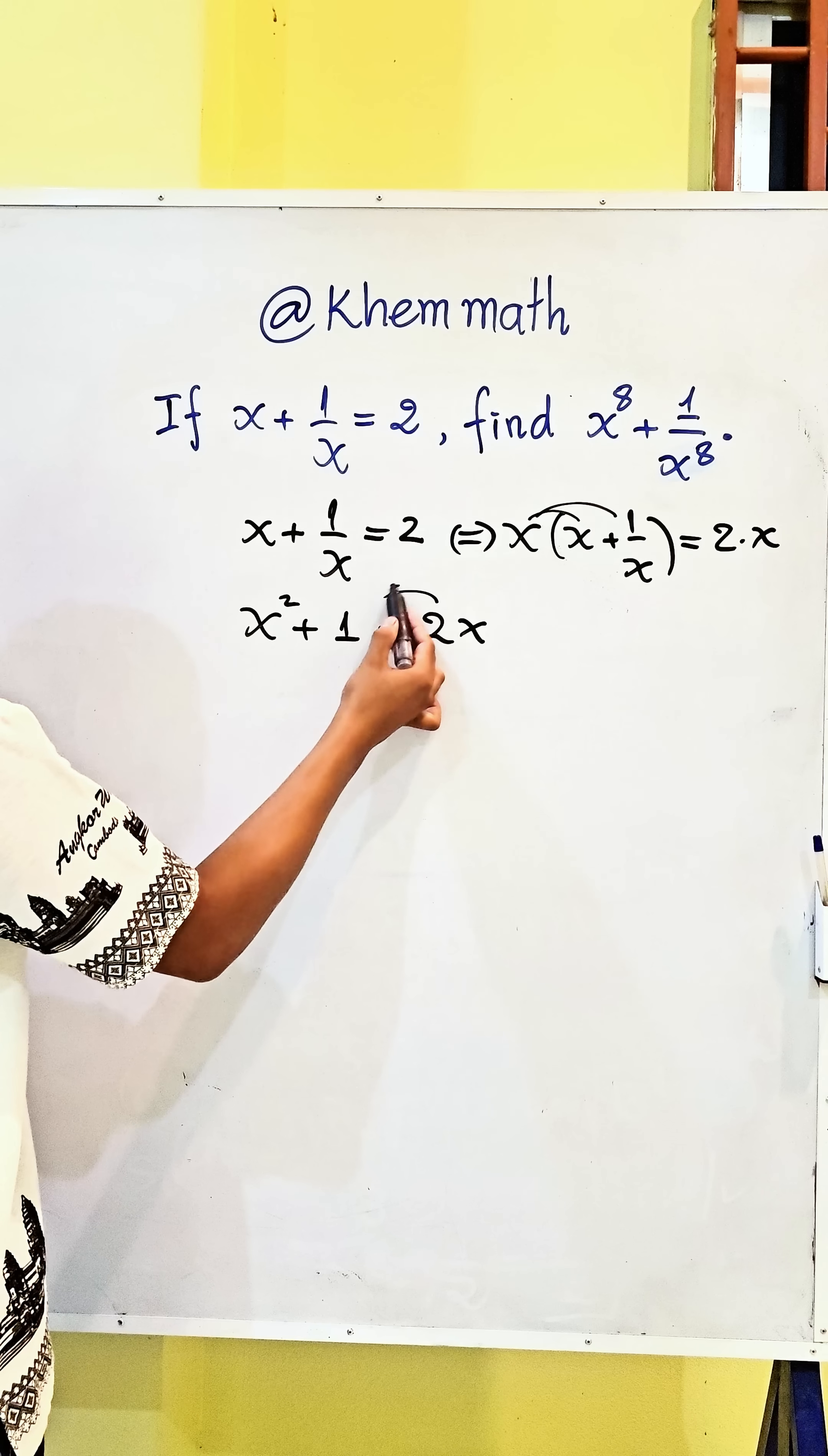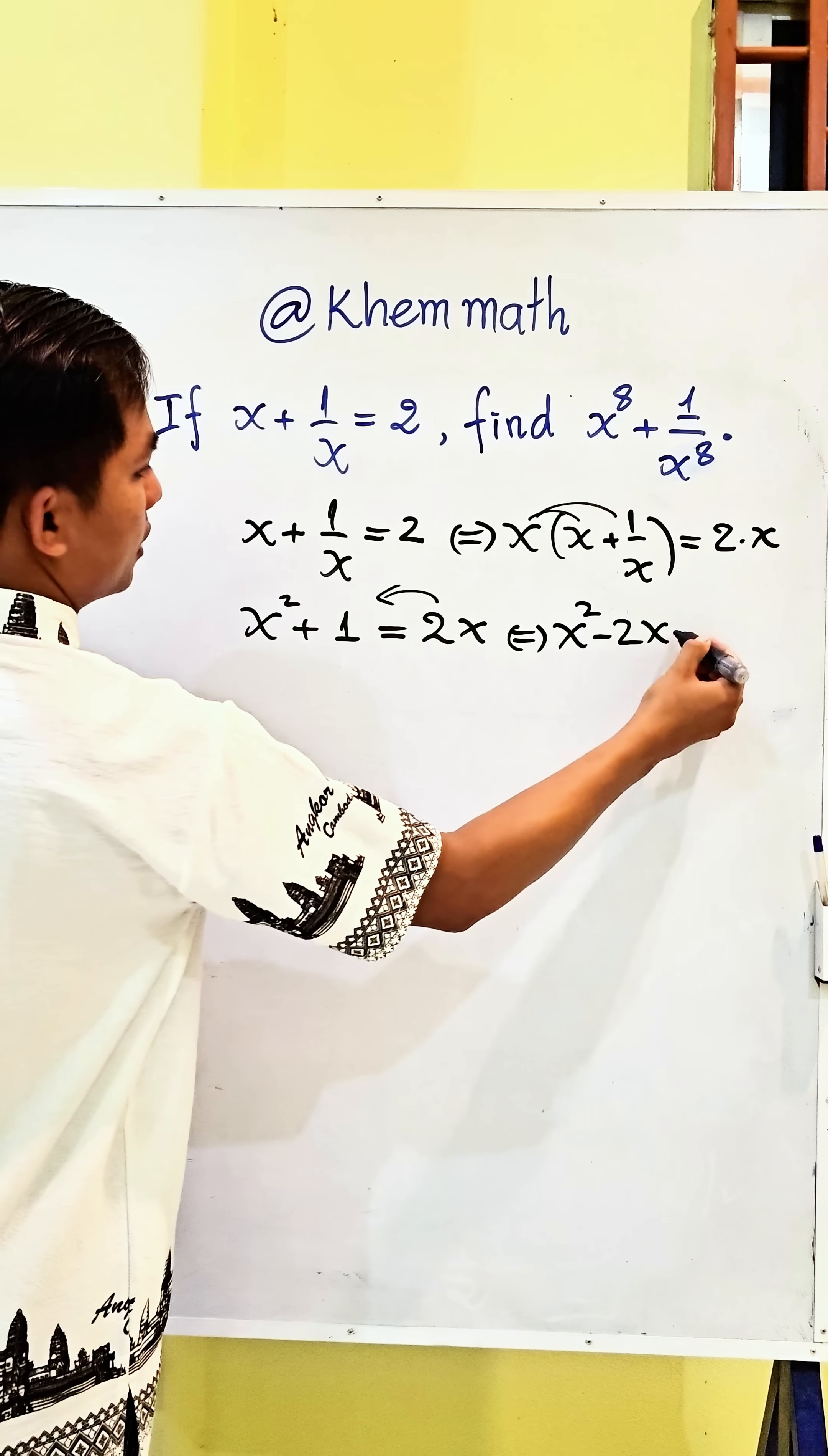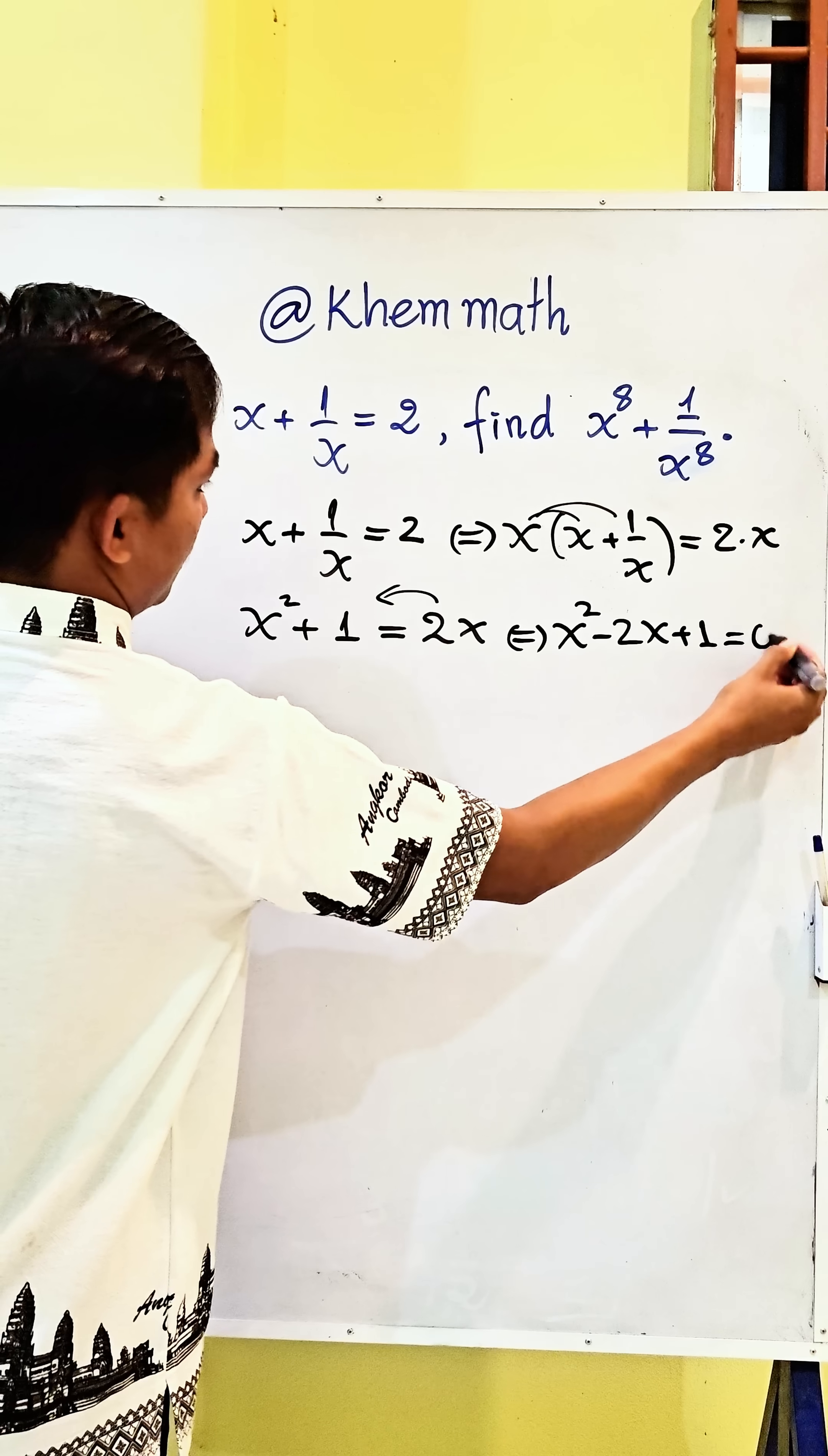And I change 2x to the left hand side, so I get x squared minus 2x plus 1 equals 0.